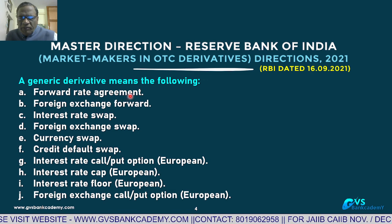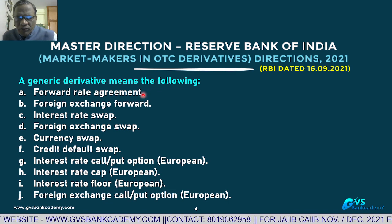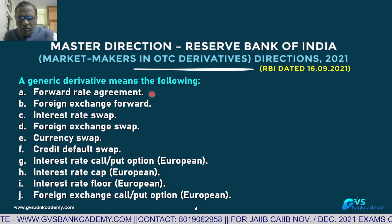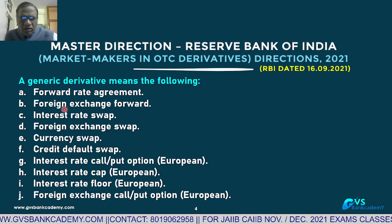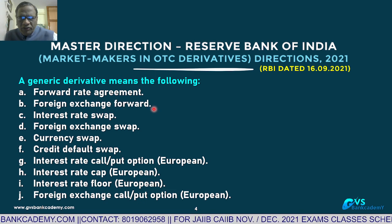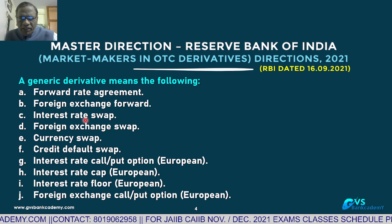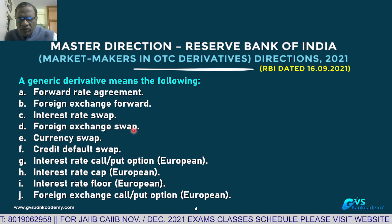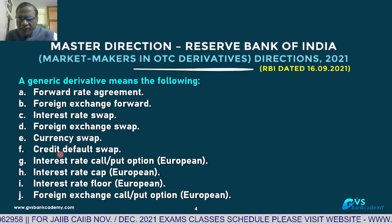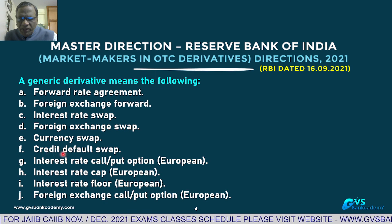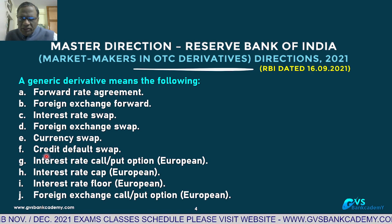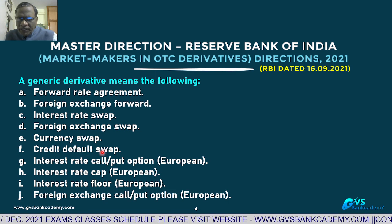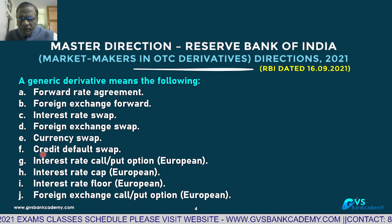OTC derivative types include: Foreign exchange forward contract — a classic instrument for exchange rate risk; Interest rate swap — exchange of one interest rate for another, also non-exchange traded; Currency swap — exchange of one foreign currency for another; and Credit Default Swaps (CDS) or credit derivatives — now widely used by banks and financial institutions to mitigate credit risk in advances or investments in bonds.